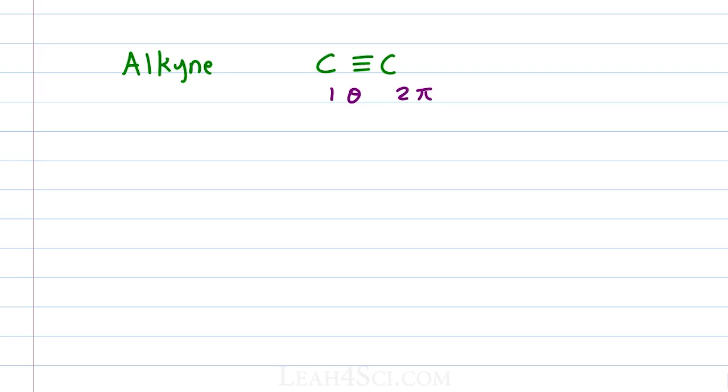To have 2 pi bonds forming between the same 2 carbons, we have to combine 1s and 1p orbital to give us an sp hybrid which means the molecule has a 180 degree bond angle.